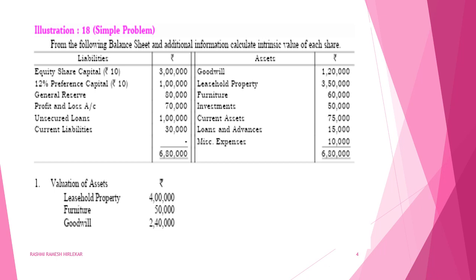On the assets side: goodwill Rs.1,20,000; leasehold property Rs.3,50,000; furniture Rs.60,000; investment Rs.50,000; current assets Rs.75,000; loans and advances Rs.15,000; miscellaneous expenses Rs.10,000.